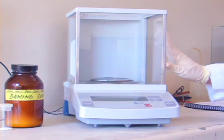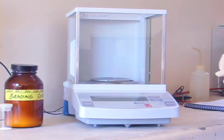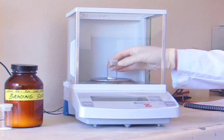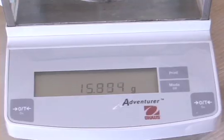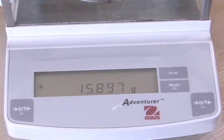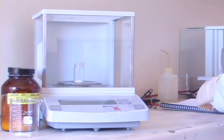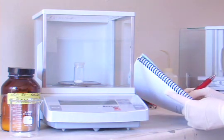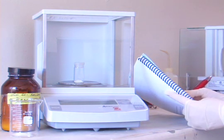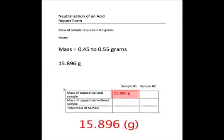Place the capped weighing vial containing the solid on the scale to determine its total mass. Once the star appears in the readout, record the mass of the capped vial and its contents on your report form. The mass of the vial and its contents is 15.896 grams.